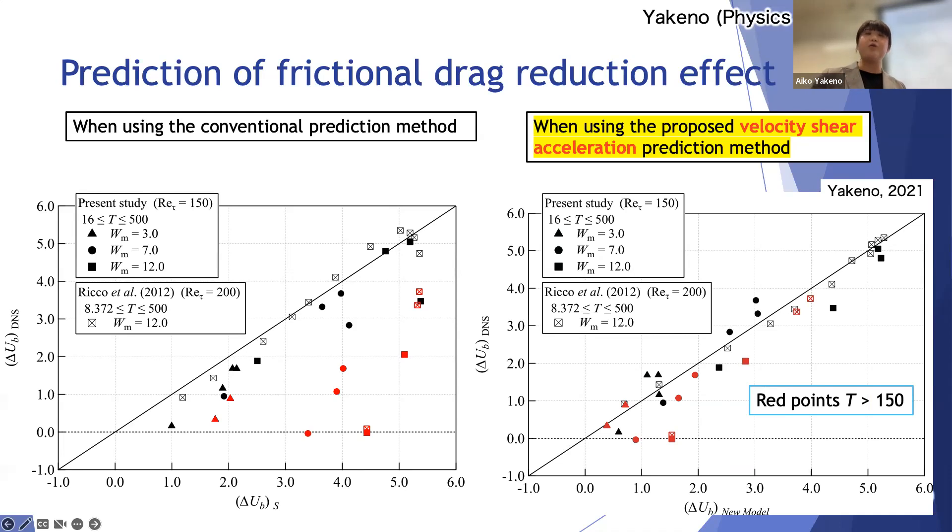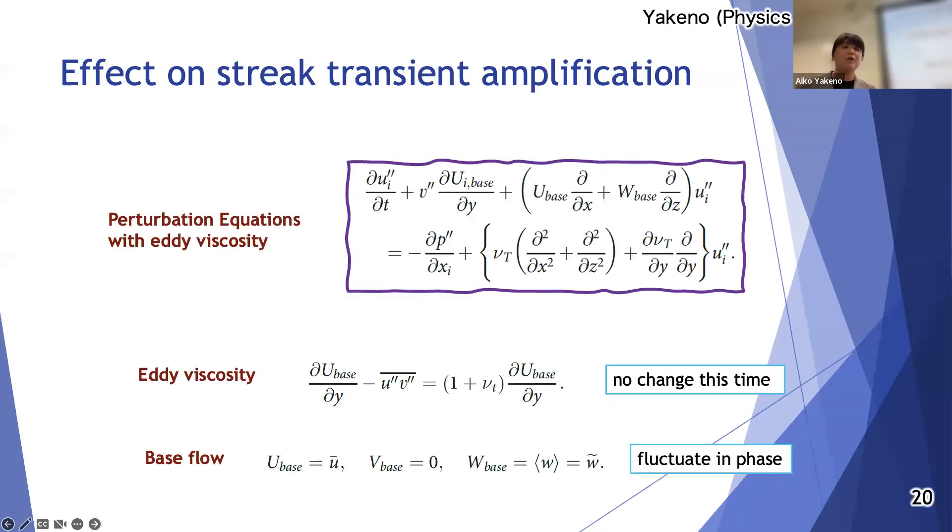When using the proposed prediction method, obviously the shear acceleration and the flow rate increase due to drag reduction could be predicted well in a wider range of control period than the conventional prediction method. The red colored ones for the longer time period control cases: the conventional prediction method cannot predict well, but the new method can predict even when the control period is wrong.